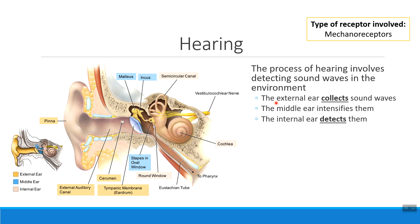The part of the ear where we actually perceive sounds, or actually hear them, is the internal ear. The internal ear is made up of all of these structures, and in particular when we're talking about hearing, we're talking about the cochlea, the part here that looks a lot like a snail shell.